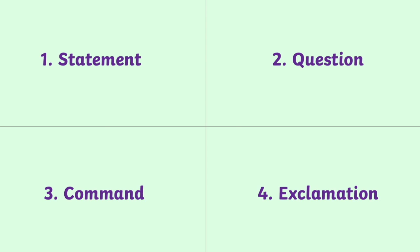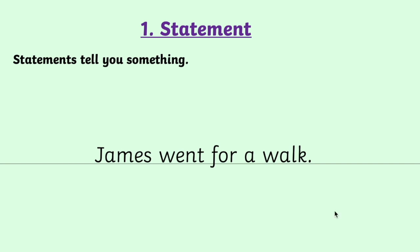Statements and questions are definitely something we've come across before because we use them all the time. Commands and exclamations might feel a bit more new — we've probably come across them, but we might not be quite as confident recognising or using them in our own work. Let's start with statements. Statements are the most common type of sentence. An easy way to think about them is: statements tell you something. Normally they tell you what someone or something is doing or what they're like, and it's normally quite straightforward in a statement to find the person or thing the sentence is about.